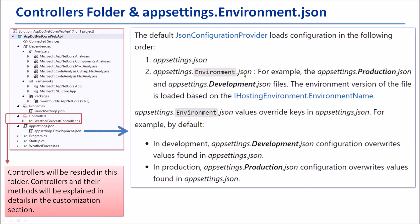The environment version of the file is loaded based on the IHostEnvironment.EnvironmentName. Namely, appsettings.{Environment}.json values override keys in appsettings.json. For example, by default in development, appsettings.Development.json configuration overwrites values found in appsettings.json. So it will change based on the environment name.